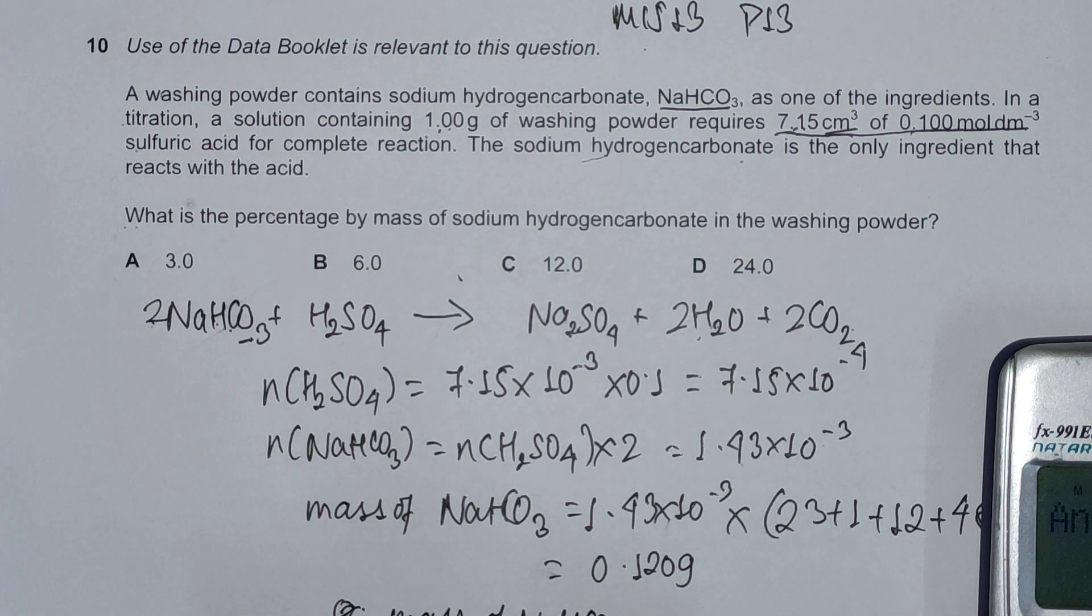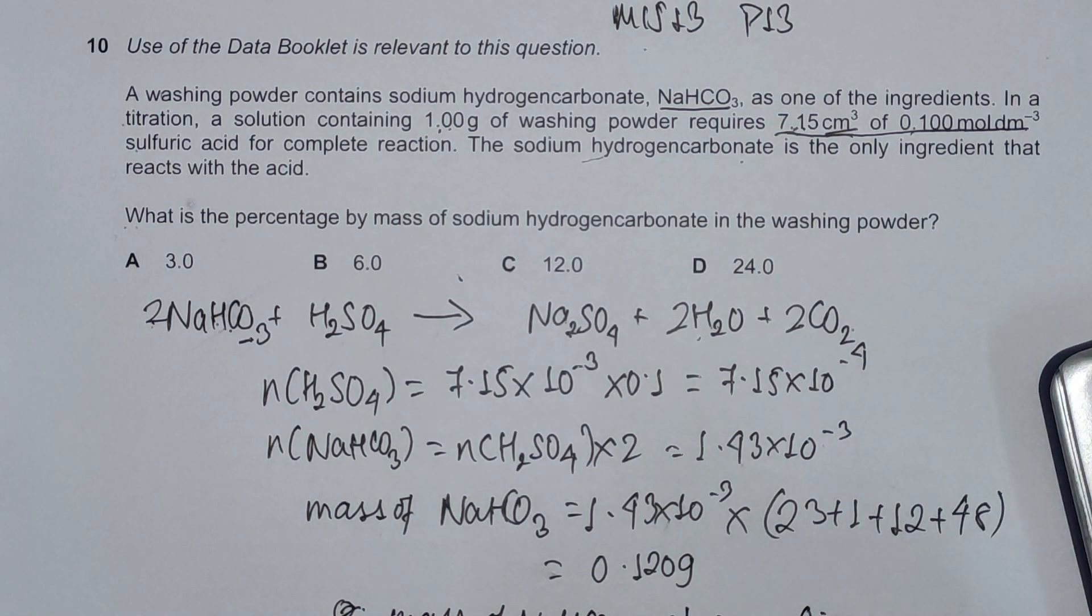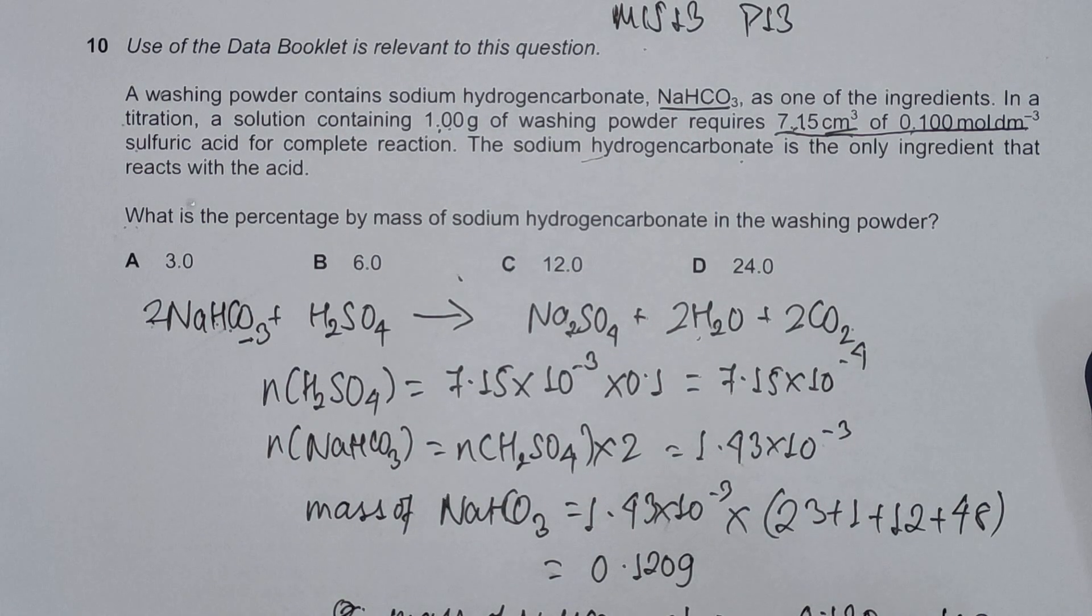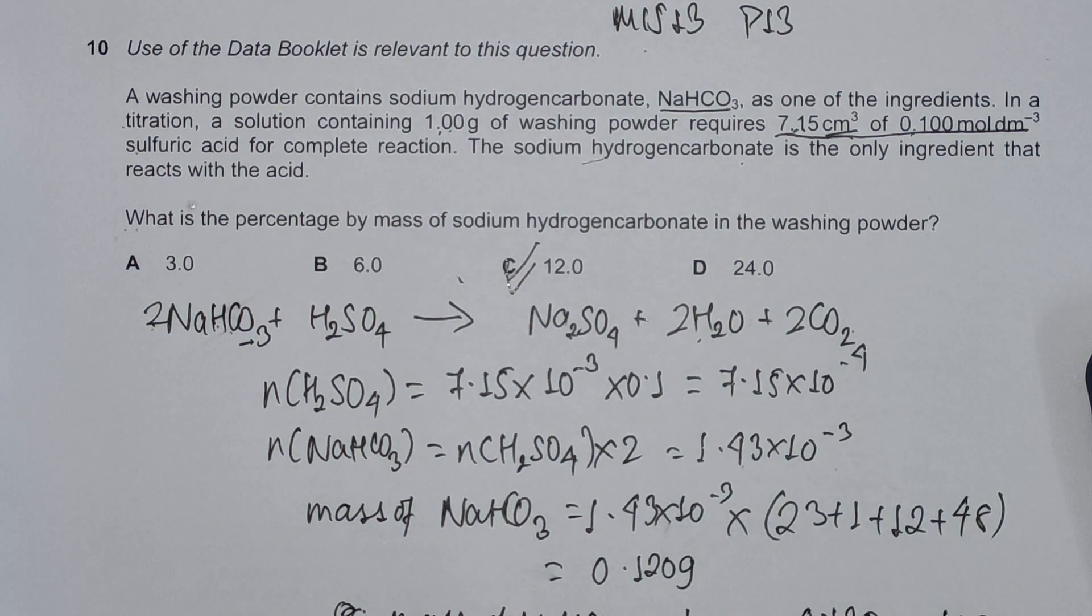This is 0.120 divided by 1.00 multiplied by 100, which is 0.120 multiplied by 100, which equals 12.0. This makes C the correct answer, 12.0%.